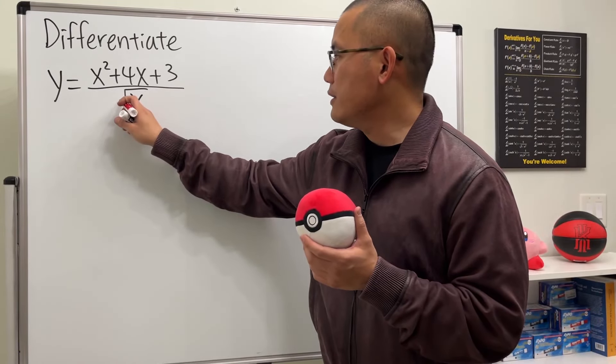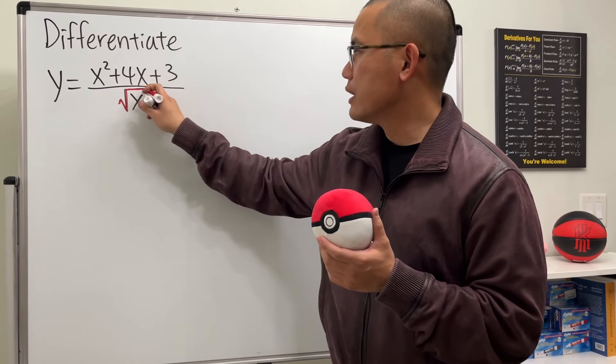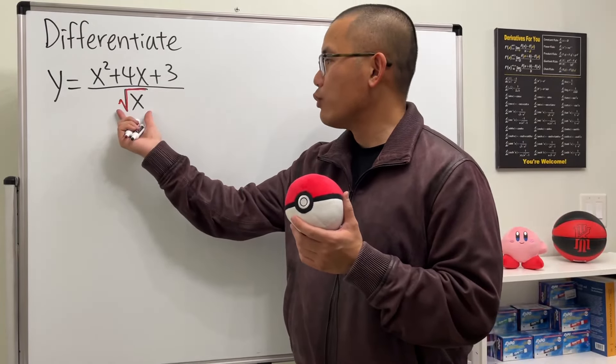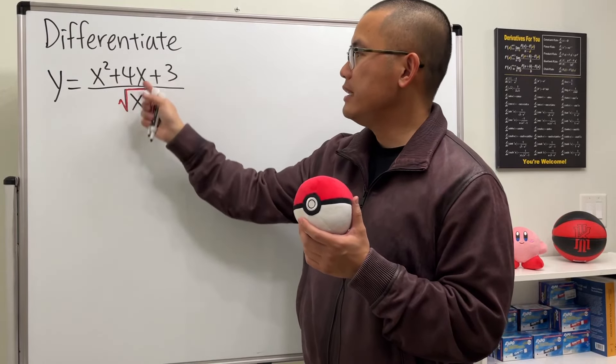So check this out. Firstly, take a look at the square root. That's the same as 1 half power. And the other thing is that, because we only have one term on the bottom, we get to split the fraction.